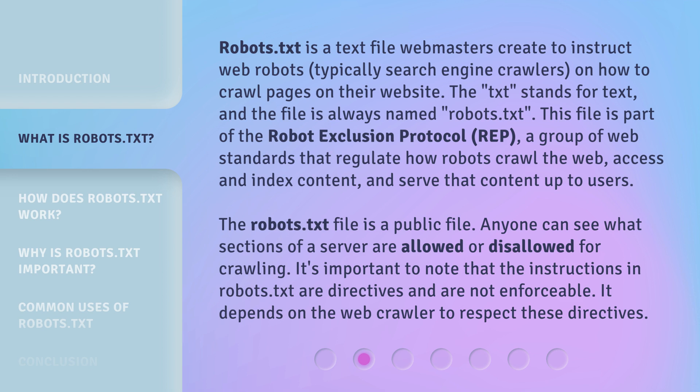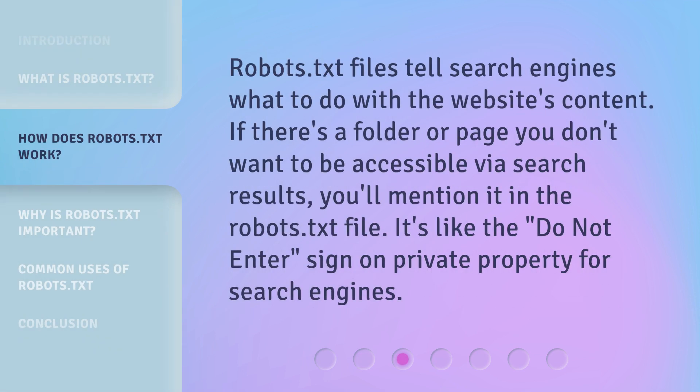The robots.txt file is a public file — anyone can see what sections of a server are allowed or disallowed for crawling. It's important to note that the instructions in robots.txt are directives and are not enforceable; it depends on the web crawler to respect these directives. robots.txt files tell search engines what to do with the website's content. If there's a folder or page you don't want accessible via search results, you mention it in the robots.txt file. It's like a 'do not enter' sign on private property for search engines.